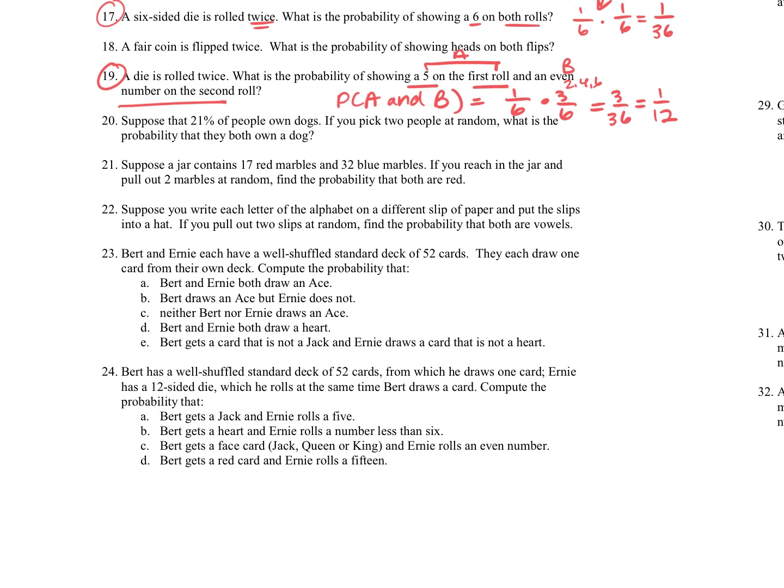For question number 21, we have a jar that contains 17 red marbles and 32 blue marbles. If you reach in the jar and pull out 2 marbles, find the probability that both are red. So if I reach in the jar and pull out 2 marbles, the first marble, there is 17 out of our total here. 17 plus 32 is 49. Now, if we actually did get red and we want to get red again, there's going to be one less of them, and there's also one less marble because we're picking those two. So this becomes, well, you can reduce the second fraction. It's 17 out of 49 times 1 over 3. So 17 out of 147 reduced.